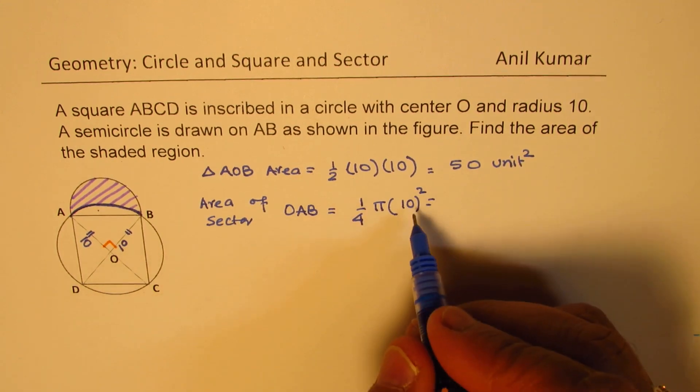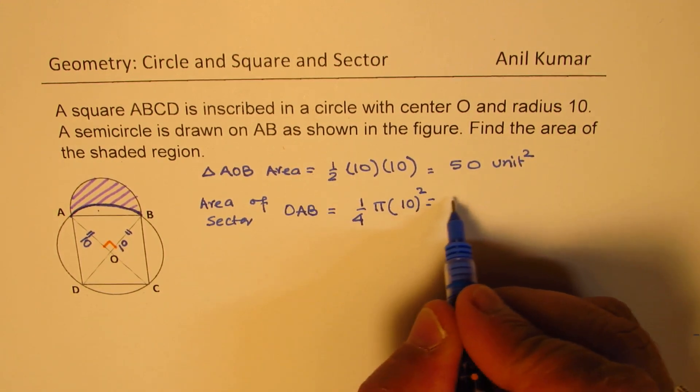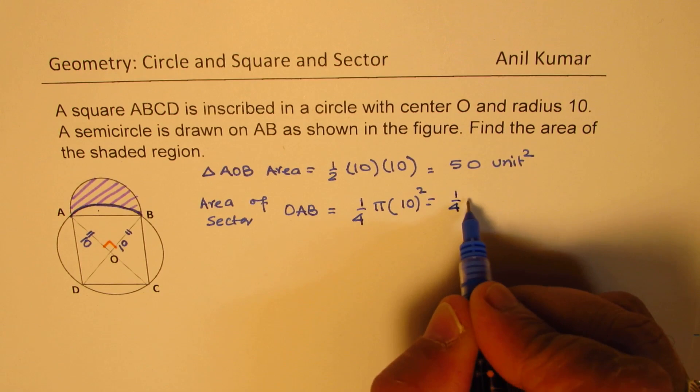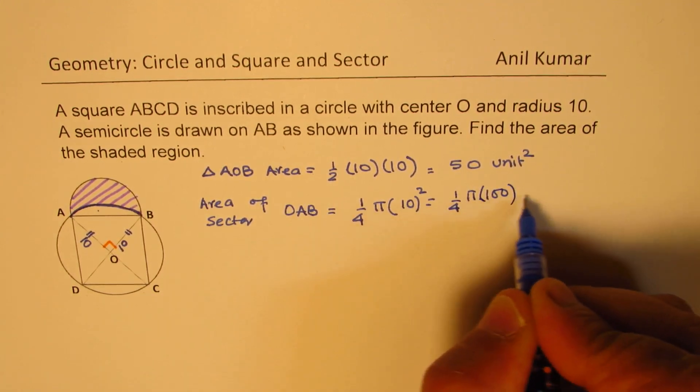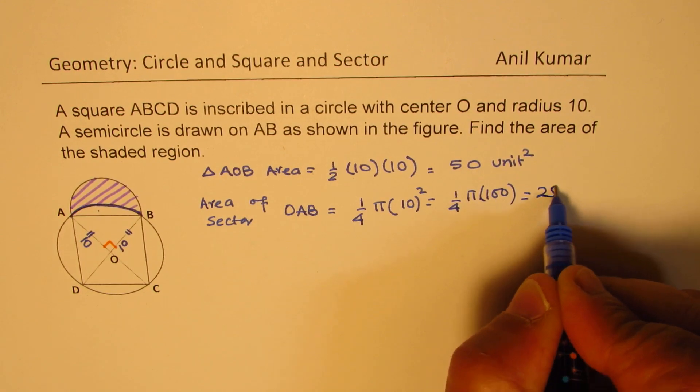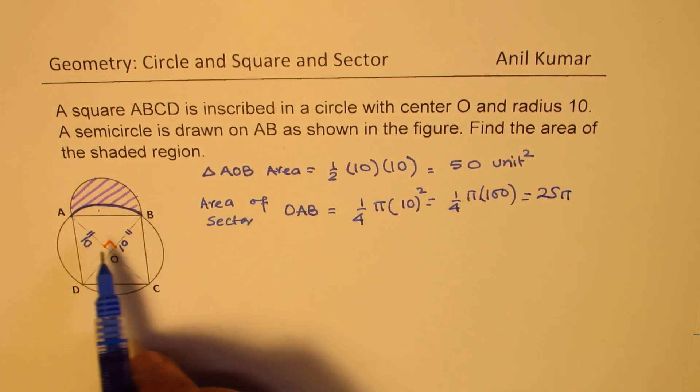So that is the area of the sector, which is, this is 100, so we have one-fourth π of 100, correct? Which is 25, so we get 25π as the area of the sector.